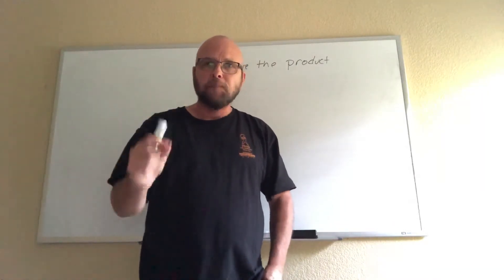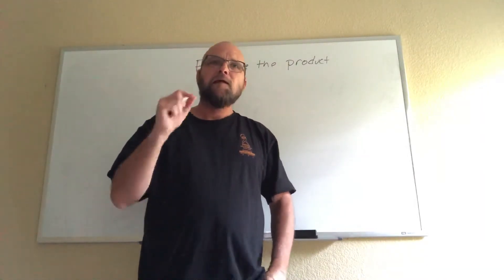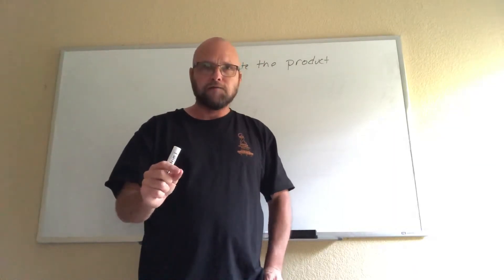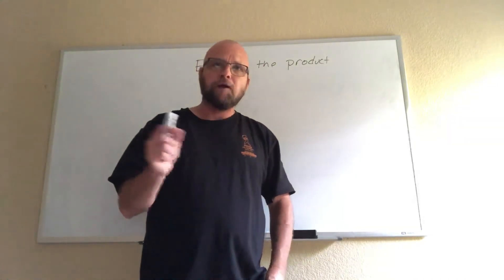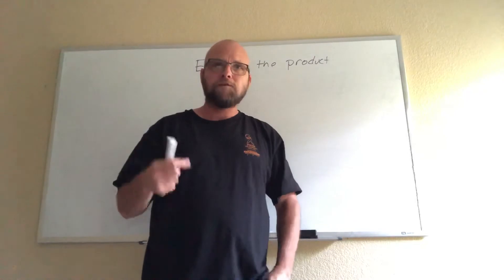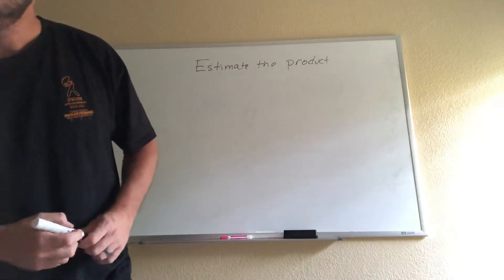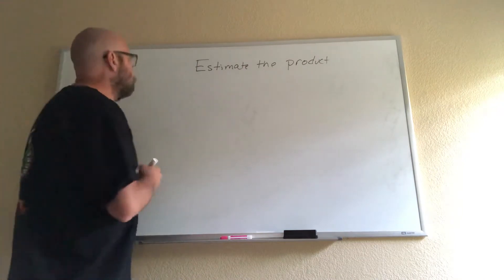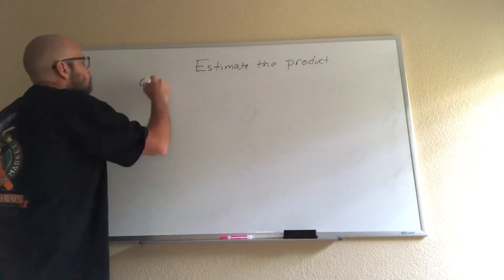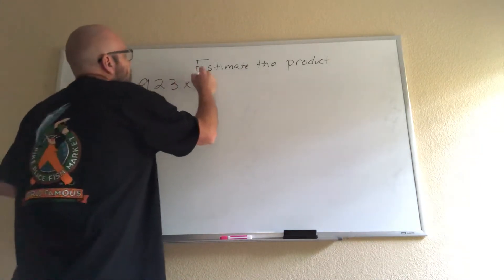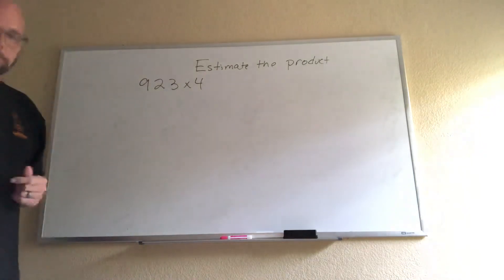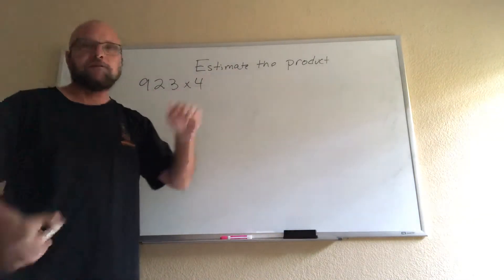I'm going to show you the estimate, then I'm going to show you the real answer, and we're going to be able to compare the two and see if they're close together. So the first problem you had to do was 923 times 4, and it was written horizontally.